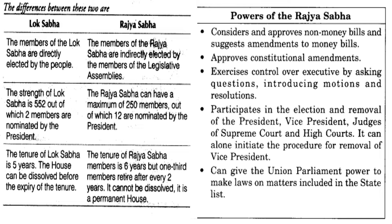Rajya Sabha is another part of the parliament. The members of the Lok Sabha, that means the MPs, select who will go to the Rajya Sabha. The total seats of the Rajya Sabha is 250, and 238 members of the Rajya Sabha are sent by the Lok Sabha members, and 12 people are nominated by the President of India.